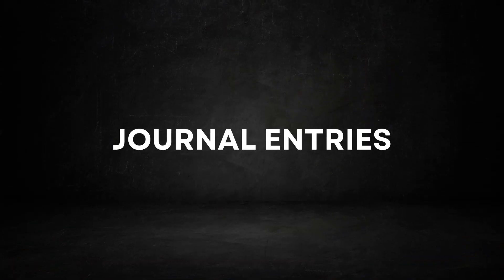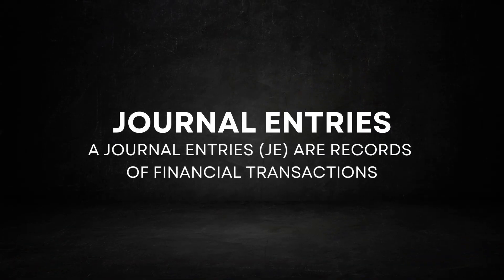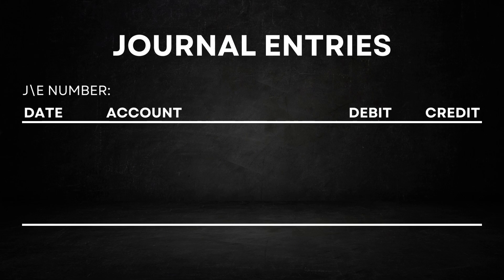Journal entries, often abbreviated as JEs, are records of financial transactions. They serve as a formal account of the transaction and provide detailed information about the accounts involved, the amounts debited and credited, and other relevant information. A journal entry consists of several components. First, we have the journal number, which acts as a unique reference to identify the entry.